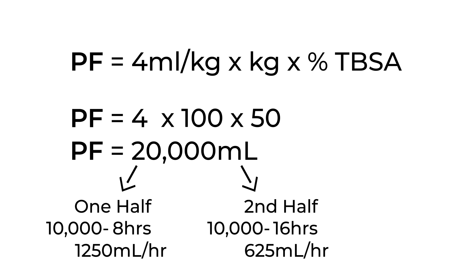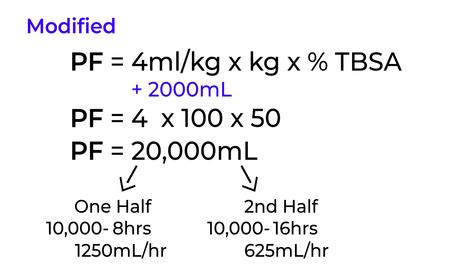There's one modification called the modified Parkland formula, which is essentially the same thing. You just add an additional 2 liters or 2,000 mLs to cover maintenance fluid needs. That's the only difference between the Parkland formula and the modified Parkland formula.